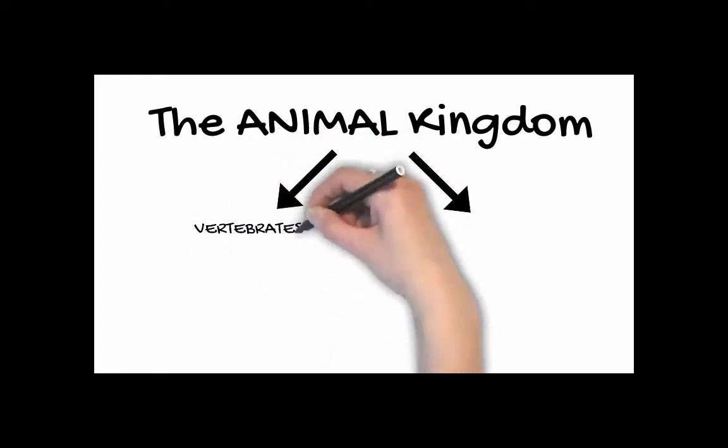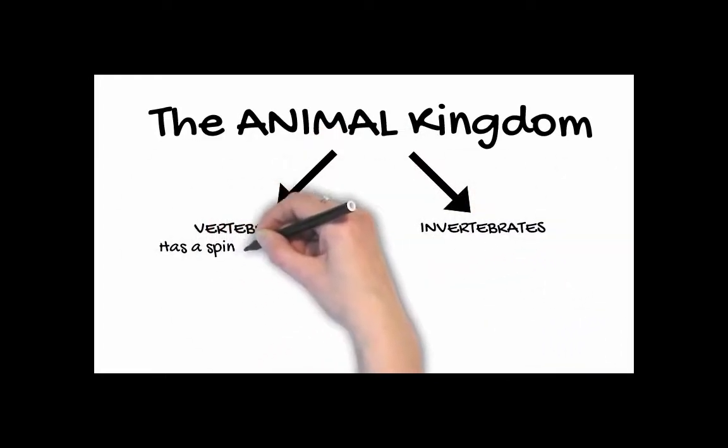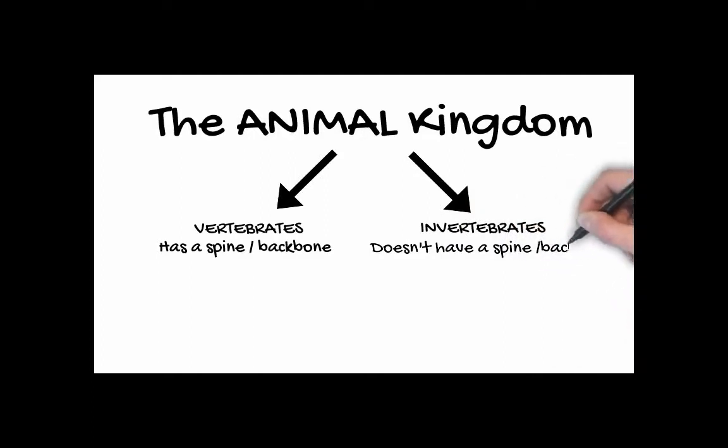Vertebrates are those that are classified by having a spine or a backbone. Invertebrates don't have a spine or a backbone.